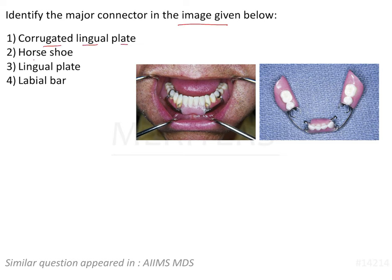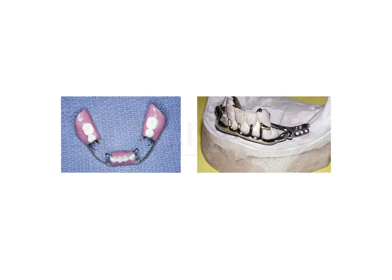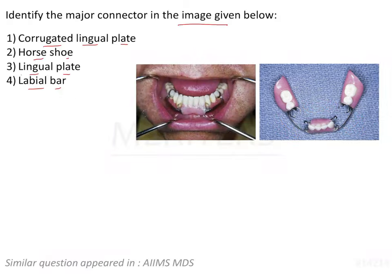The options are: corrugated lingual plate, horseshoe, lingual plate, and labial bar. In the photo, it is very clearly visible that the major connector is on the labial side. This is the lingual side and this is the labial side. So definitely it is none of the lingual plate or corrugated lingual plate, which leaves us with horseshoe and labial bar.